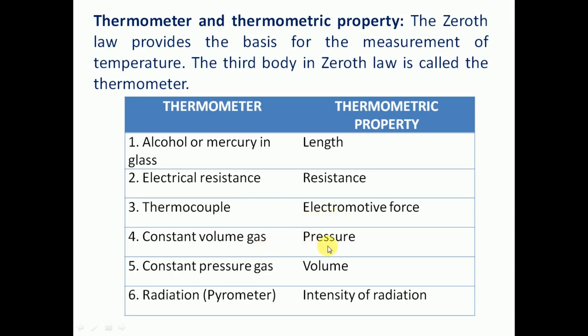For a constant volume gas thermometer, the thermometric property is pressure. For a constant pressure gas thermometer, the thermometric property is volume. For a radiation pyrometer, the thermometric property is intensity of radiation, and it is used for measuring high temperatures.